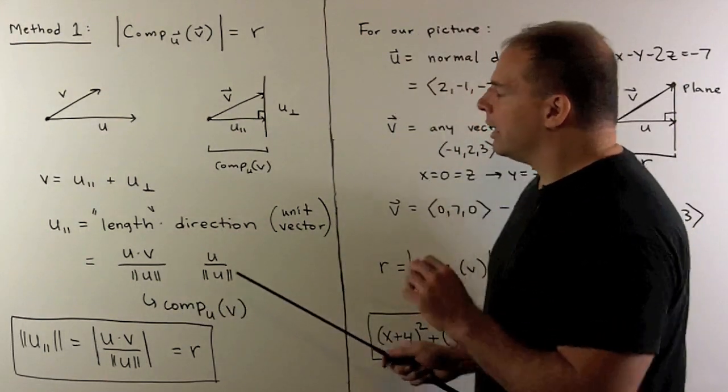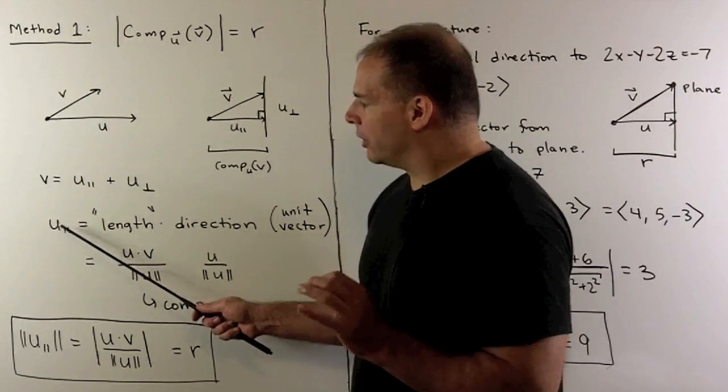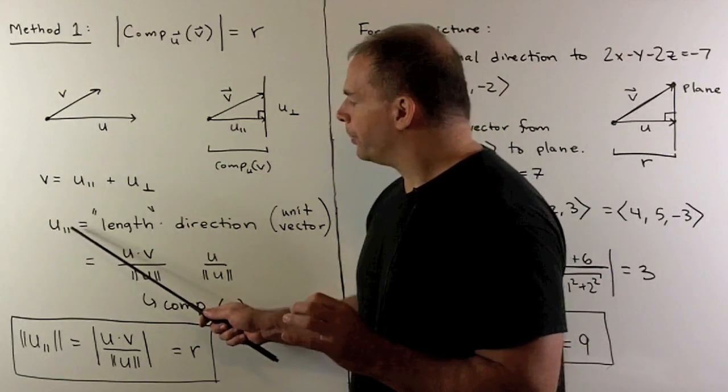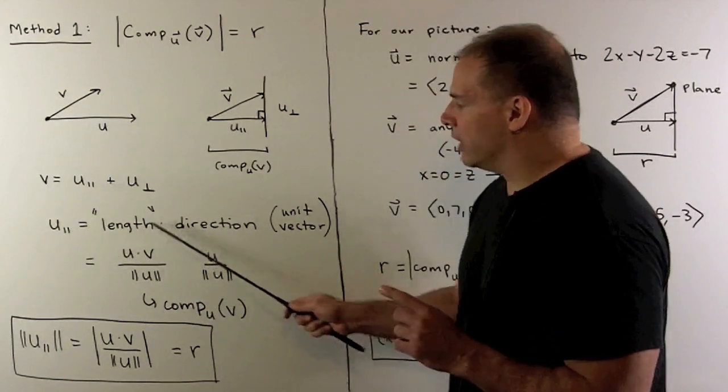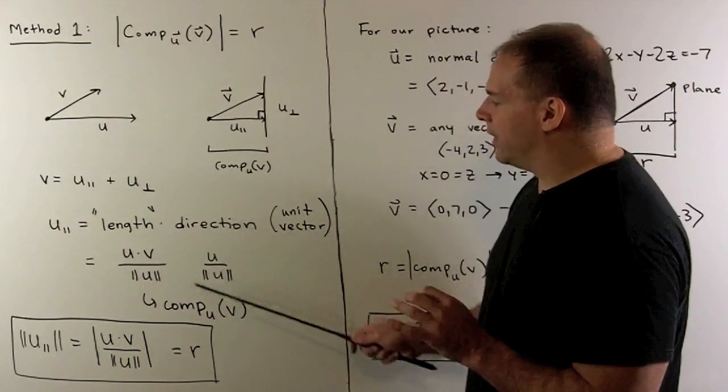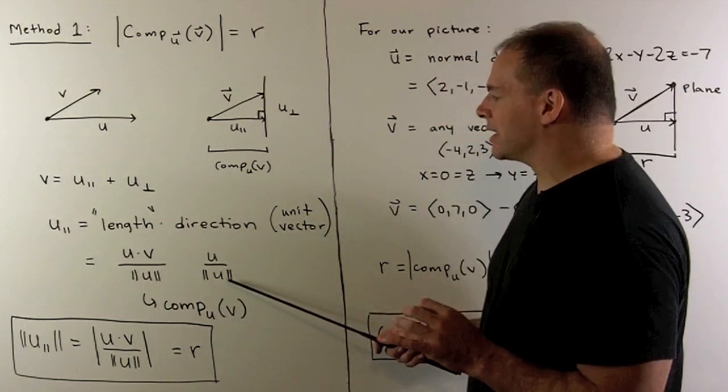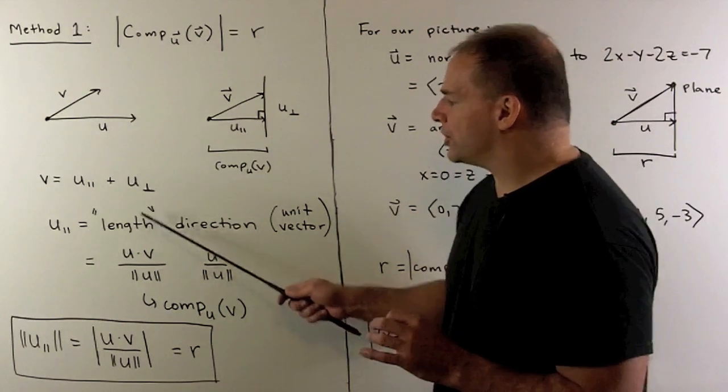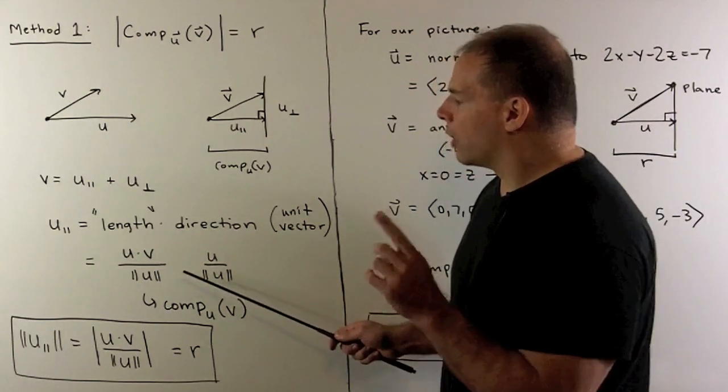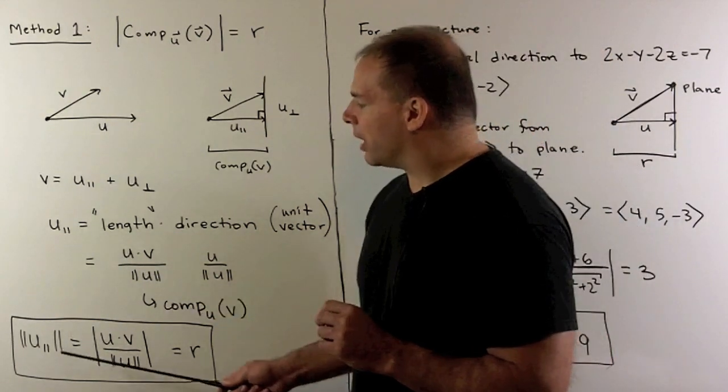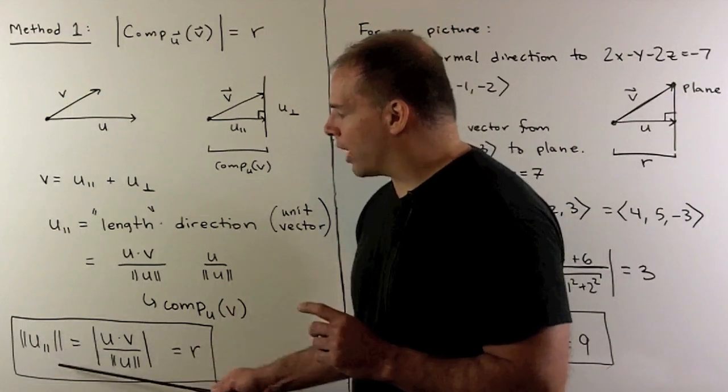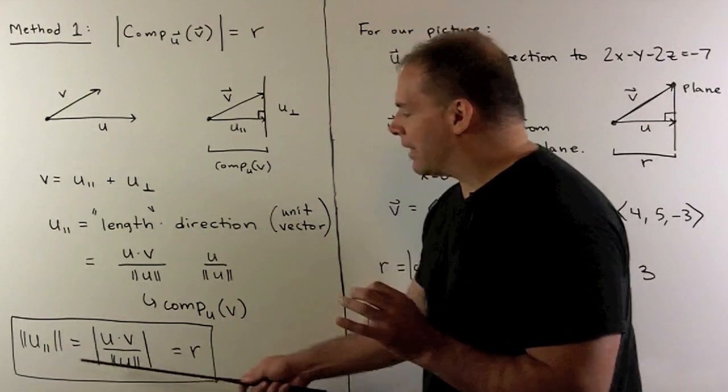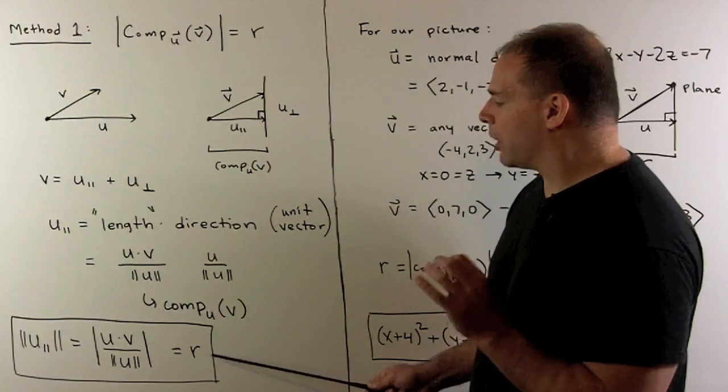Now note, if we take the length of the parallel part to u, what happens? We have a number times a vector. If we take the length of this vector, it's a unit vector, so it has length 1. The number, we just take the absolute value of. So we're going to have that the length of the parallel part in the direction of u is just given by this formula here. That's going to be our radius.